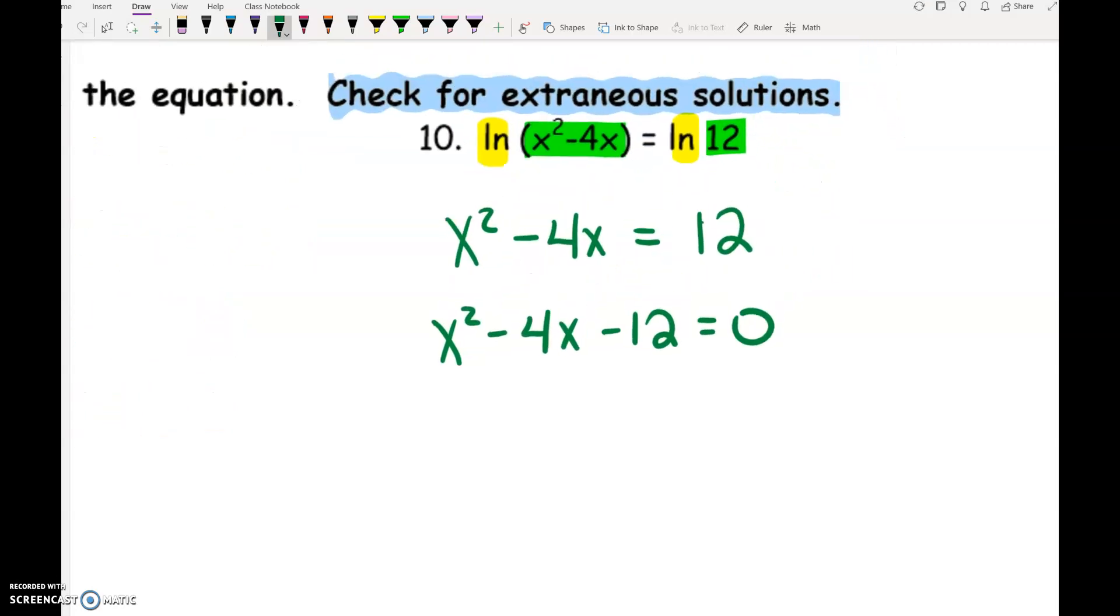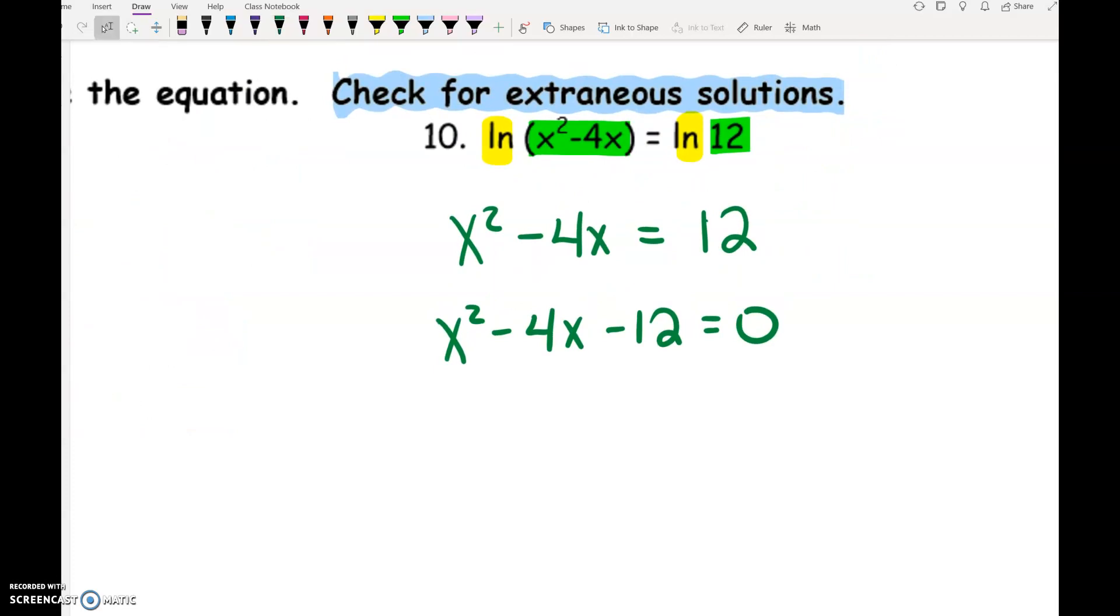And there is going to be some factoring and solving in this section. Remember when we're factoring, we are looking for two numbers that multiply to give us the last number. Those same numbers need to add up to the middle number. So 1 times 12, no. 2 times 6, 2 and negative 6.